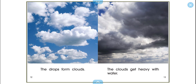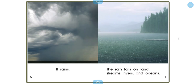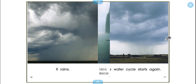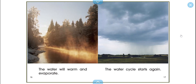The clouds get heavy with water. It rains. The rain falls on land, streams, rivers, and oceans. The water will warm and evaporate. The water cycle starts again.